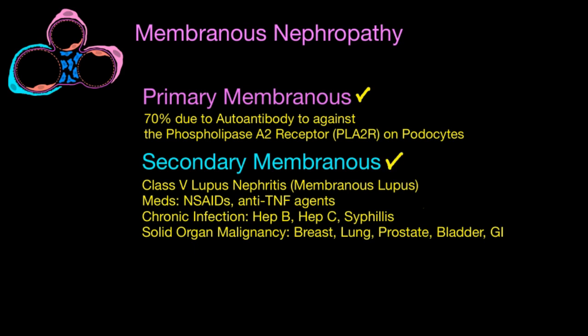Secondary membranous is when a patient develops membranous nephropathy due to some other illness or systemic disorder. The first that comes to mind is lupus — patients with lupus nephritis can develop class 5 lupus nephritis, which is the membranous form. Medications can do this, like NSAIDs or anti-TNF agents. Some chronic infections — chronic hepatitis B, rarely chronic hepatitis C, and even syphilis — have all been reported to cause membranous nephropathy. One important cause of secondary membranous is solid organ malignancy, so it's worth considering whether the patient is up to date with age-appropriate cancer screening and reviewing history and physical for any signs of underlying malignancy.